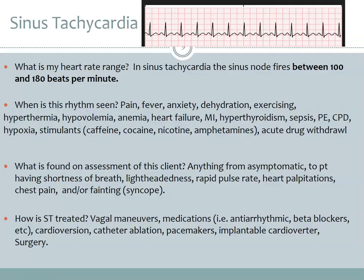Next we look at sinus tachycardia. It's important that you are able to pick out these rhythms. Sinus tachycardia means the sinus node is firing between 100 and 180 beats per minute. We see this with patients who are exercising — an expected increase — or it could indicate the patient is in pain, having an anxiety attack, is dehydrated, has an infection, is hypovolemic, or hyperthermic.